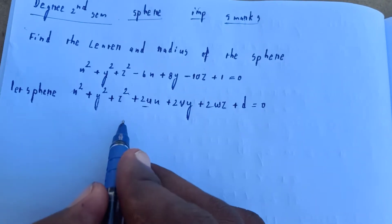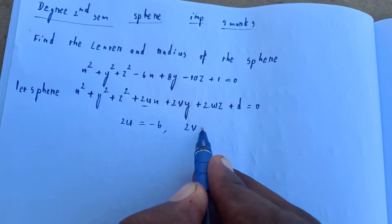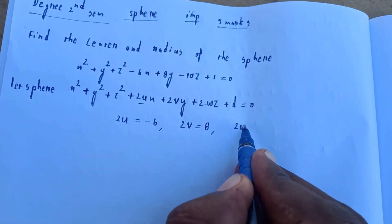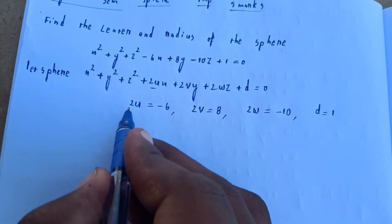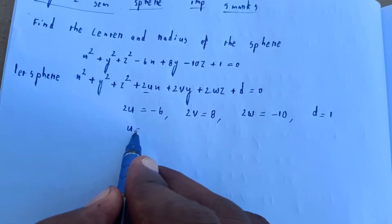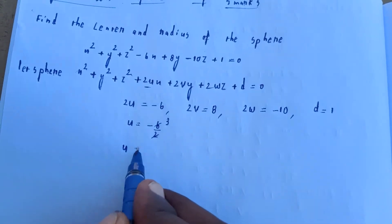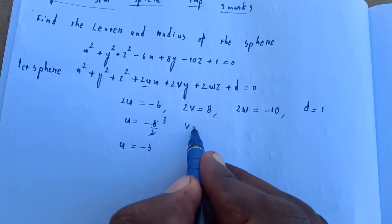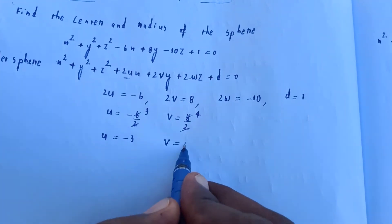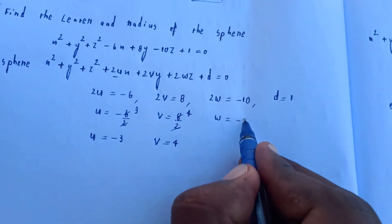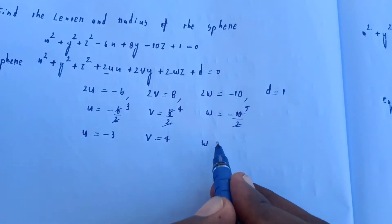Comparing coefficients: 2u equals minus 6, so u equals minus 3. 2v equals 8, so v equals 4. 2w equals minus 10, so w equals minus 5.